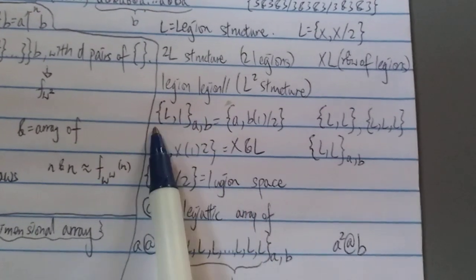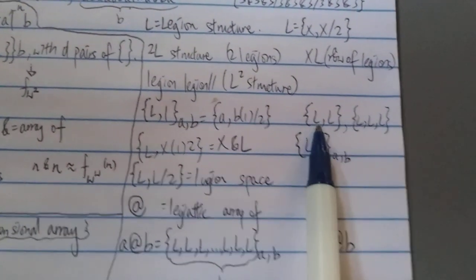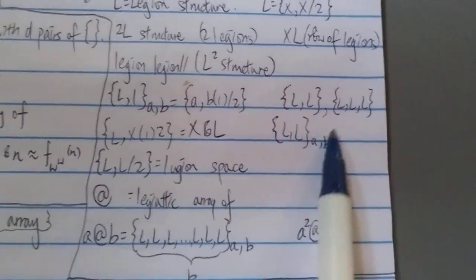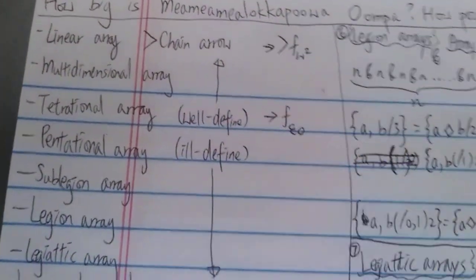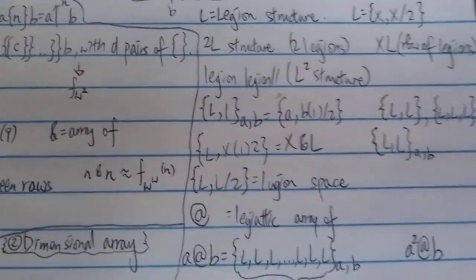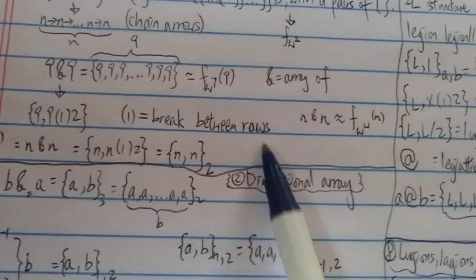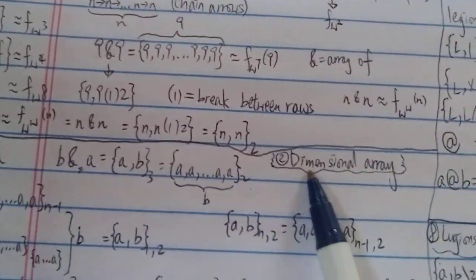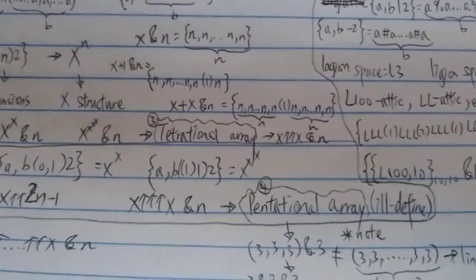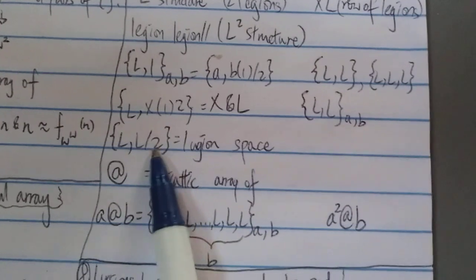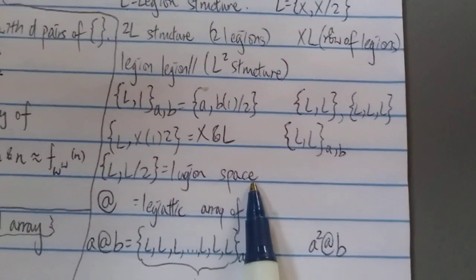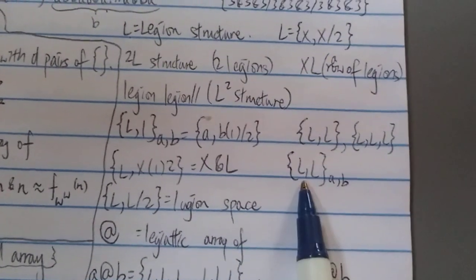You can use L inside the array itself — like {L1, a, b}. You can repeat this whole thing all the way from the linear array: for example, a four-entry array where you put L, L, L — way beyond what we've seen so far. You can continue using L in dimensional arrays, pentational or tetrational arrays, and even repeat it all the way from the legion array using L as well.